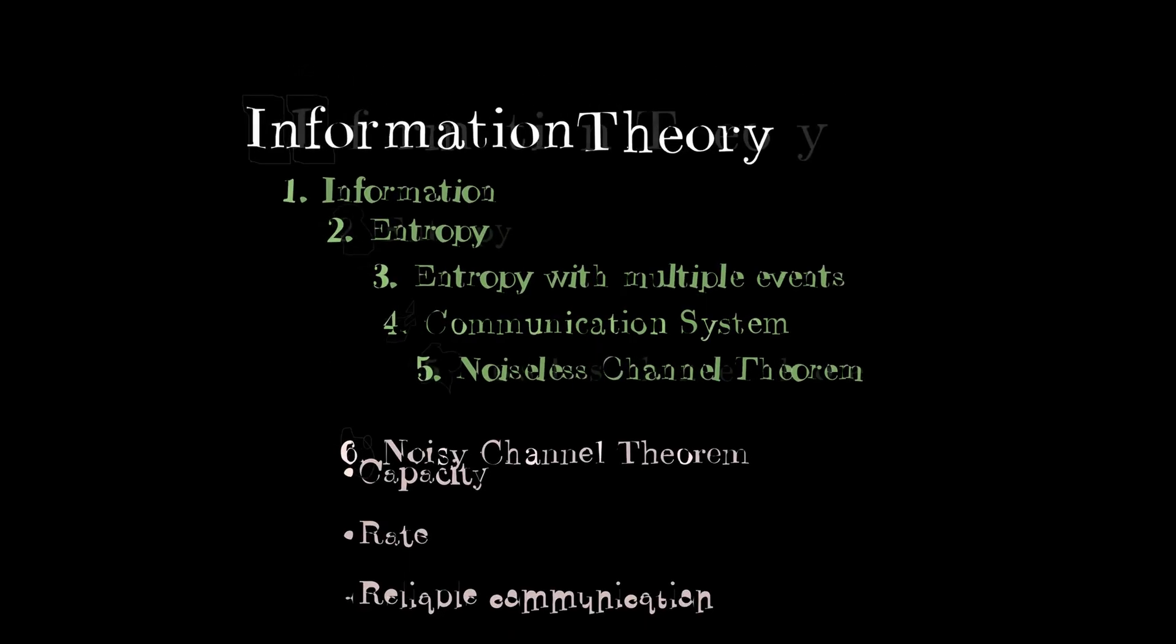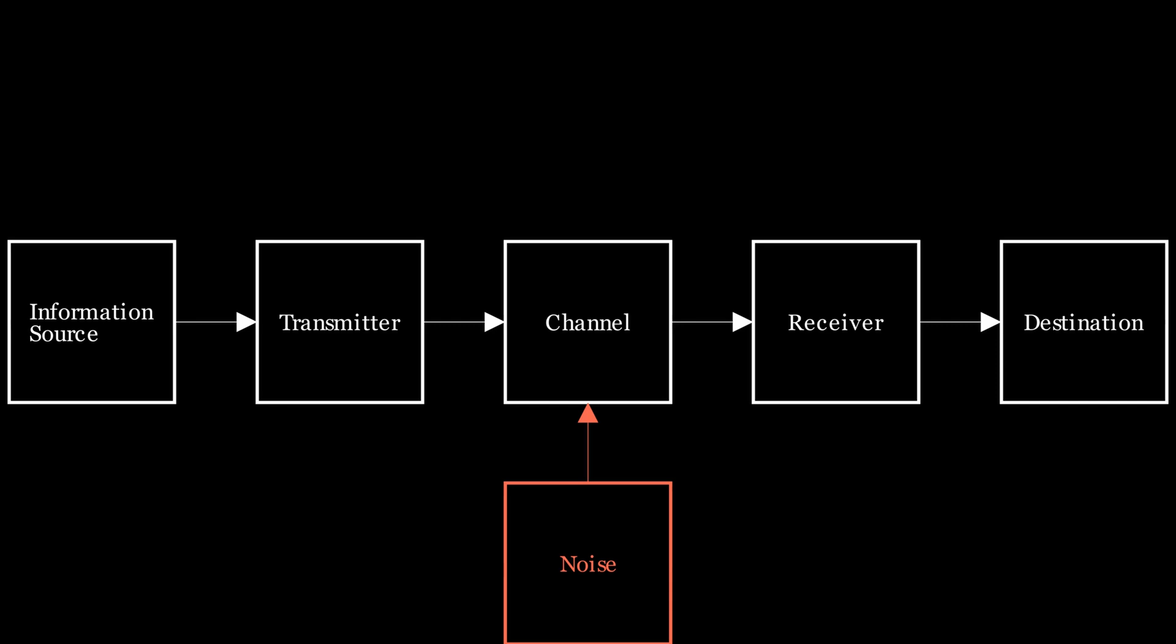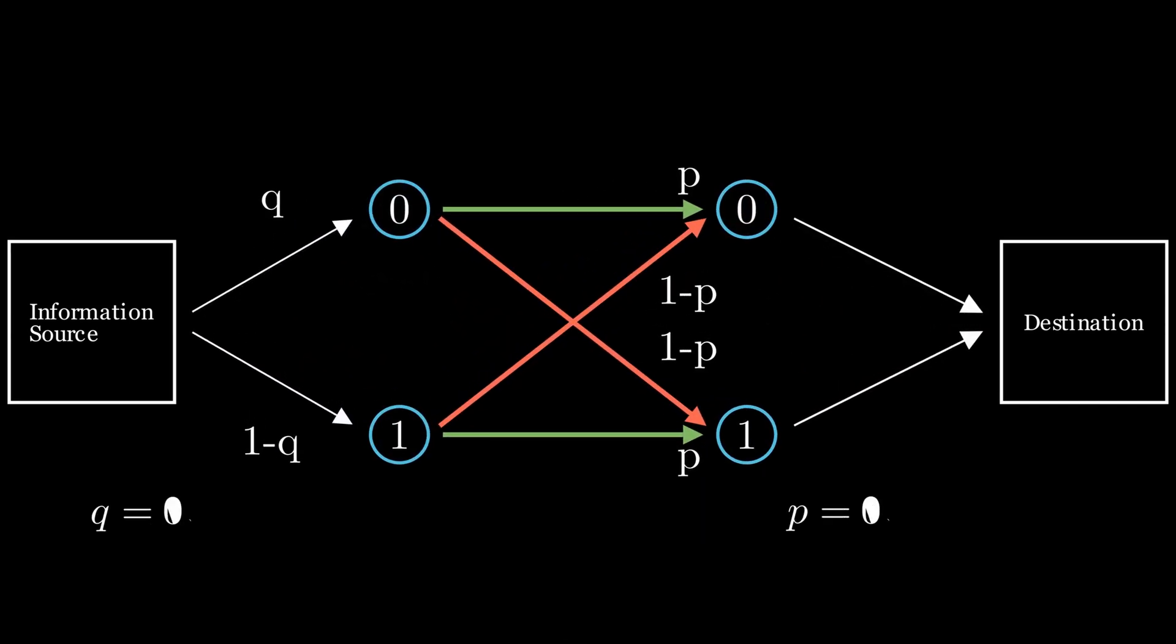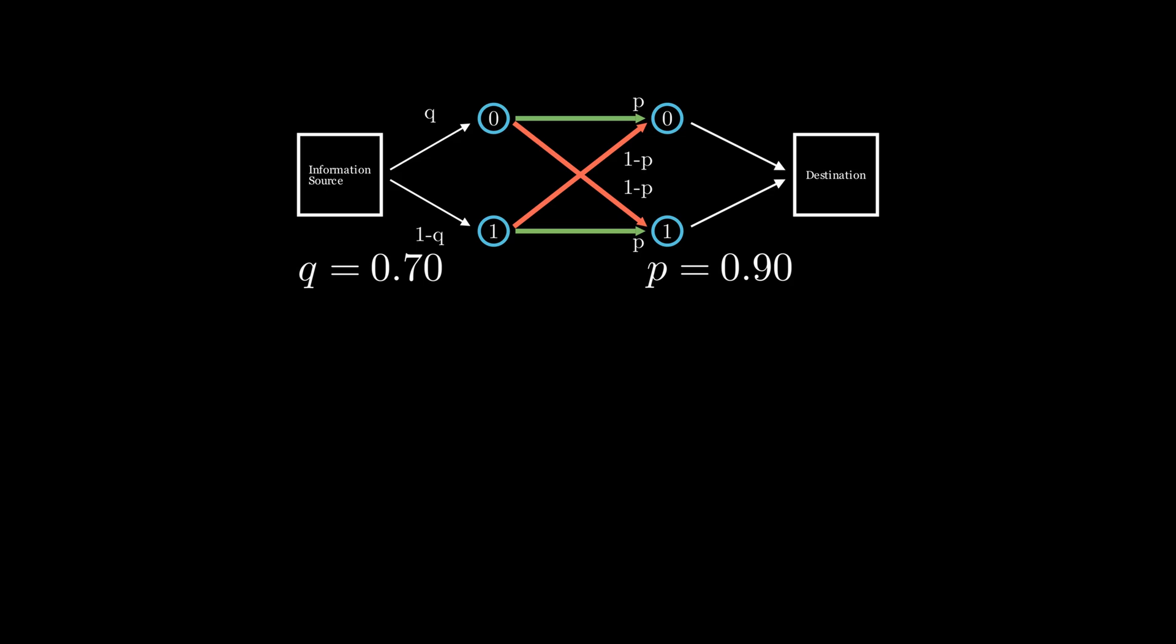Given our blueprint for a communication system, and using the binary symmetric channel as our means of communication, we need a way to calculate the rate at which we are able to send information through that channel.